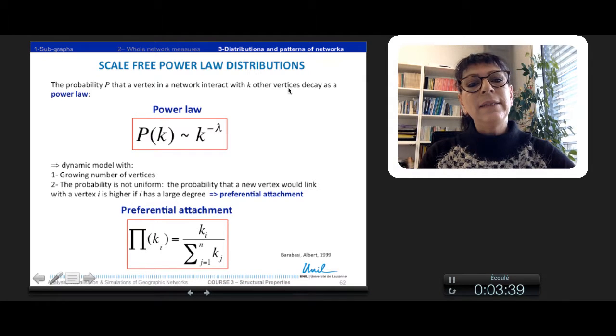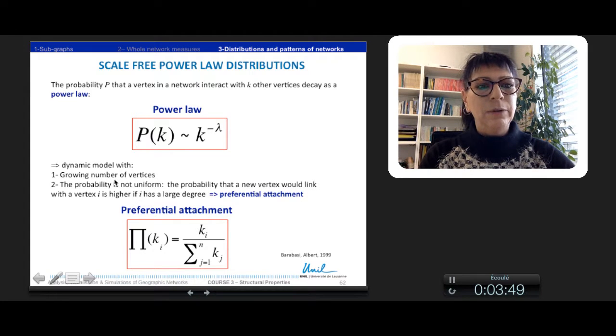The probability is not uniform as the probability that a new vertex would link with a vertex i is higher if i has a large degree.